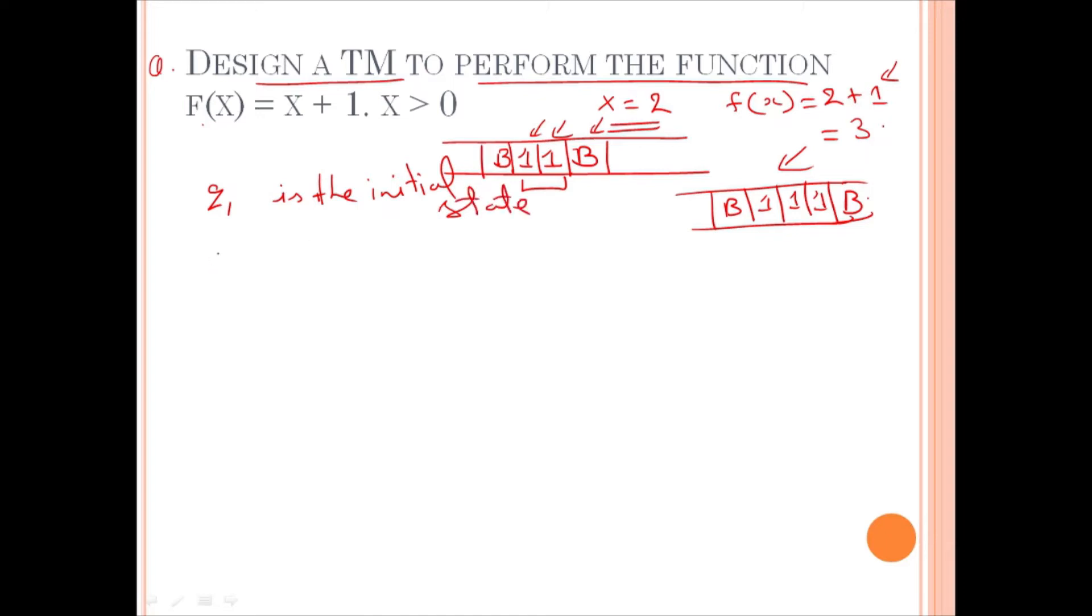So, we can think delta q1 1. Suppose the read head is at this position. So, what do we have to do? We have to move rightwards. So, q1, 1, right.